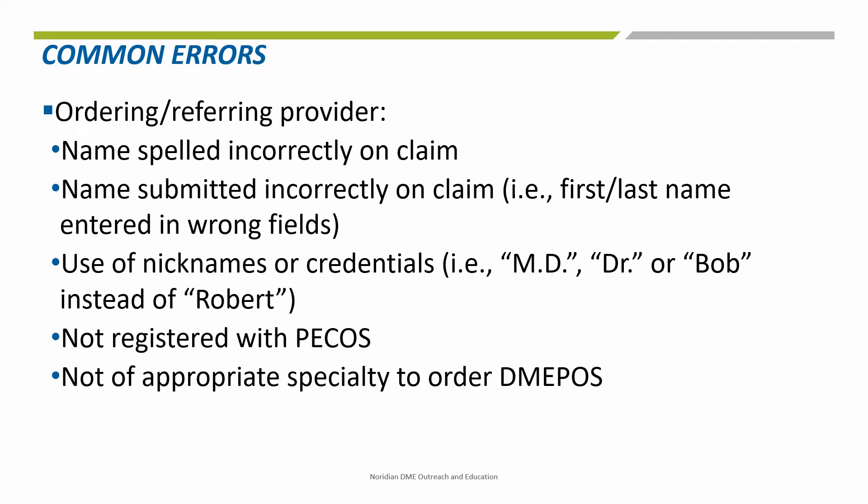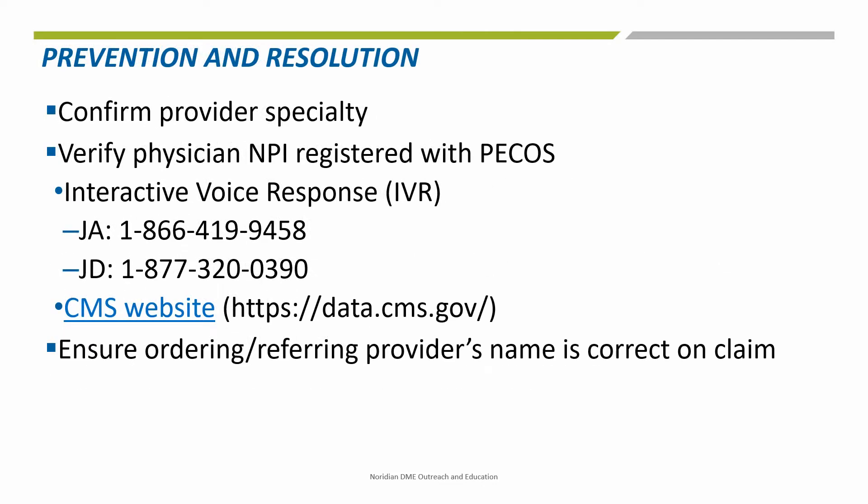Some of the reasons suppliers may receive a PECOS-related denial are listed on this slide, such as spelling errors and the use of nicknames. Check to see if the provider is a specialty that can order DMEPOS — for example, physical therapists, although they may be enrolled in PECOS, are not allowed to order DME for Medicare purposes. Verify that the ordering physician's NPI is on the list of practitioners enrolled in PECOS. This can be done by calling the Interactive Voice Response or IVR and selecting Option 6, or by checking the CMS website. Be sure the ordering or referring provider's name on the claim does not use nicknames or credentials, and that first and last names are spelled correctly and entered into the correct fields.